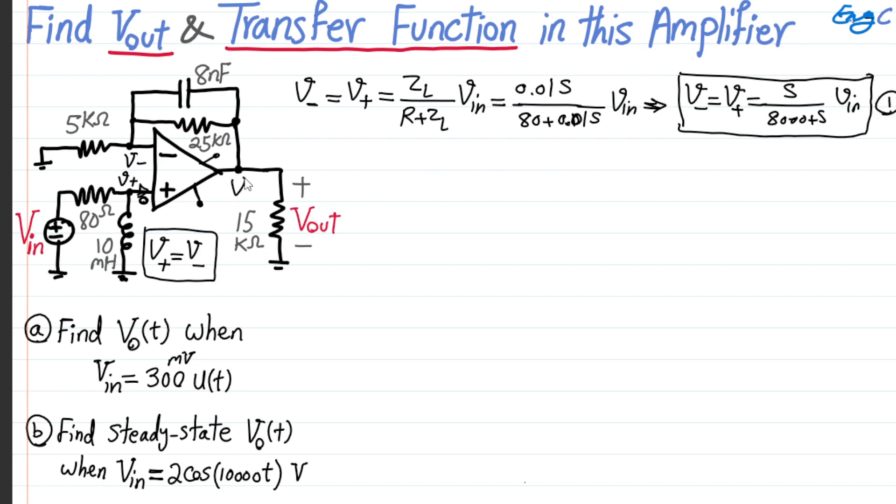For equation two, we have Vout as shown here, and you can see that we have effectively, because no current can flow through the input terminal, whatever current come out of these two caps and let's say whatever current end up going this way, it should go this way. There is no way for that current. So effectively, the parallel of 8 nF and 25 k is in series with the 5 k shown here.